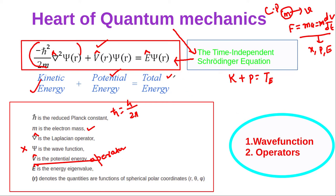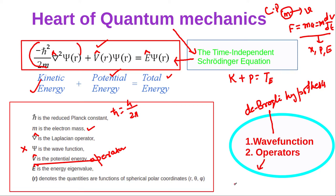Before starting the Schrödinger equation, we need some prerequisites: what is the wave function, what is an operator, and what are the physical interpretations of each. Before understanding the wave function, we need to know the de Broglie hypothesis. Before understanding operators, we need to know the uncertainty principle.